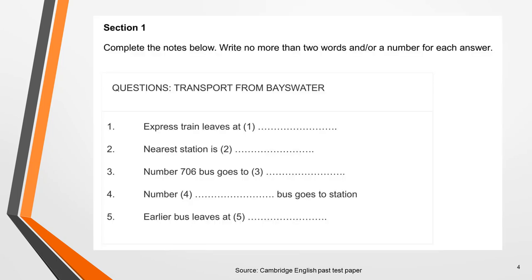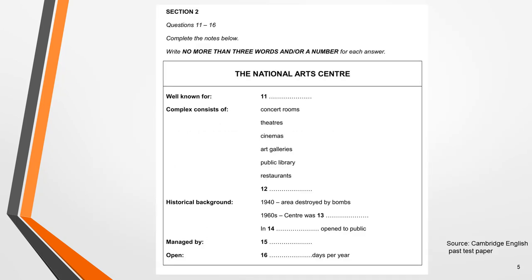Here are two note completion questions from past IELTS listening papers. The recording for the first sample question is a telephone conversation between a clerk at an inquiry desk of a transport company and a man asking for travel information. You're required to fill in the missing information about travel options by bus and train from Bayswater to Harbour City. The recording for the second sample question is a radio broadcast about the National Arts Centre, where you're required to fill in six pieces of missing information. I'm going to use the second example to teach you the answer strategy.